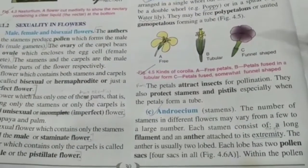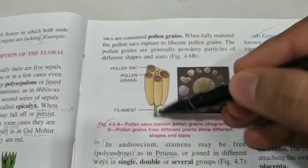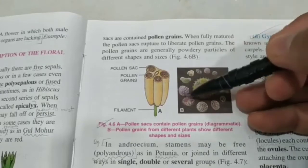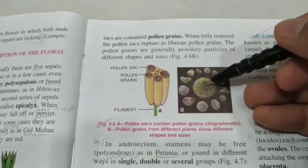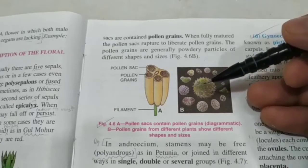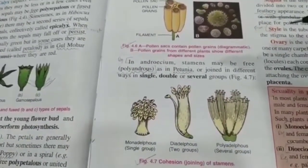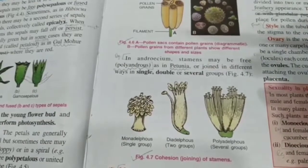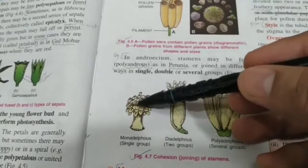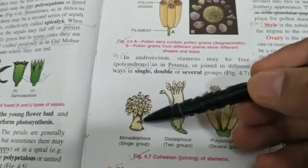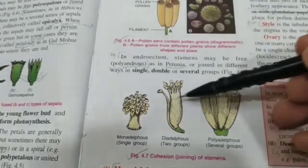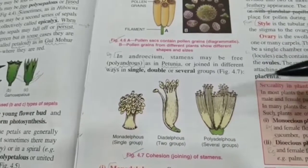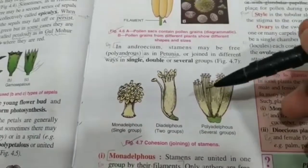Next, let's talk about the androecium — the male part made up of stamens. Each stamen has a filament and a bilobed anther with four pollen sacs containing many pollen grains. Inside each pollen grain we have a nucleus that will mature into the male nucleus or male nuclei. The androecium may be arranged in four ways: if all stamens are free, it is called polyandrous (example: petunia); if all filaments are fused but anthers are independent, it is called monadelphous (example: china rose and cotton); if filaments are united into two bundles, it is diadelphous (example: pea); and if filaments are united into multiple bundles, it is polyadelphous (example: bombax).